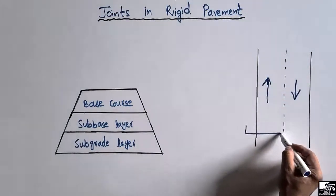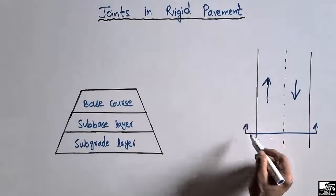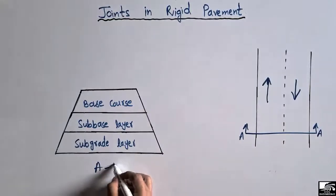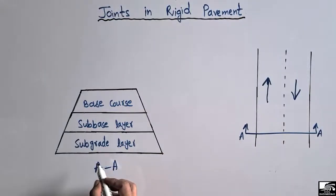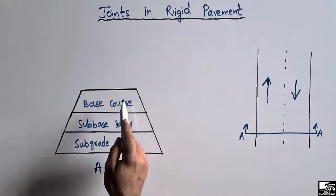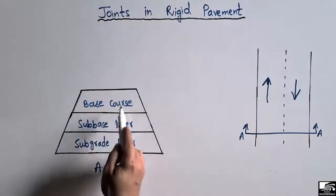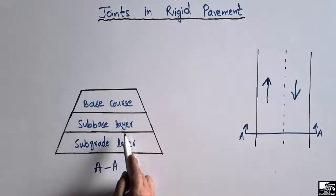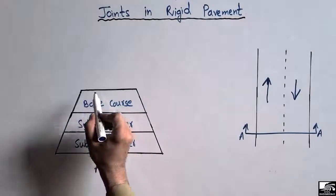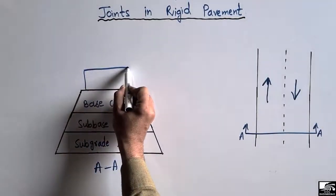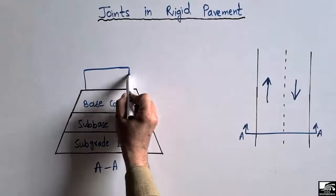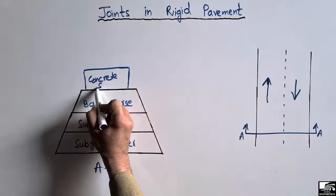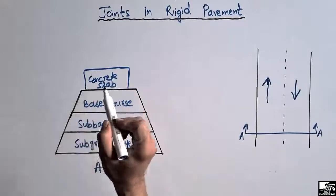If we look into the cross-section of the rigid pavement, we can see the different layers: the subgrade layer, the sub-base layer, and the base course layer. These are the three important layers placed in the construction of the rigid pavement, and on top of the base course there is a concrete slab placed on top of these layers.